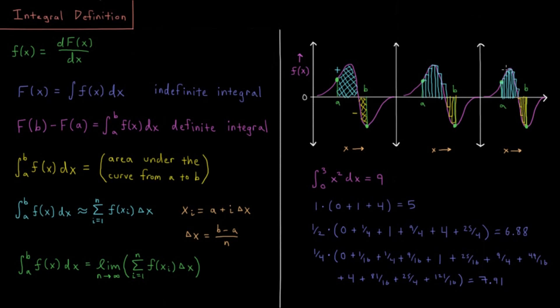So the more rectangles I use, you can see I have much less error there because the regions that I'm missing are getting smaller. And as they get smaller and smaller, that error is going to eventually go to zero as these rectangles become infinitely thin, as the regions become infinitesimally small.